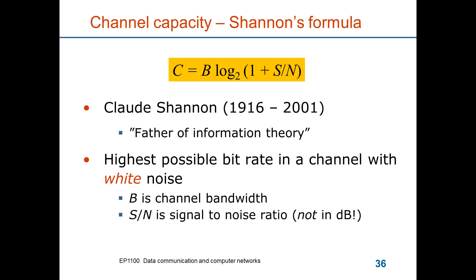This limit was formulated by Claude Shannon, often referred to as the father of information theory. The expression is not very different from the Nyquist-Hartley law: the capacity equals the bandwidth times log₂(1 + SNR), where the signal-to-noise ratio is the actual ratio between the two powers — not expressed in dB. This is the highest capacity achievable on a channel with additive white noise.